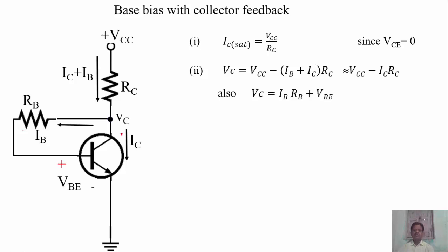We can also find VC in another way. VC is the voltage from the collector to the ground. Going through that path, there is the voltage drop across RB — that is IB times RB — and the voltage drop VBE. So VC can also be written as IB times RB plus VBE.